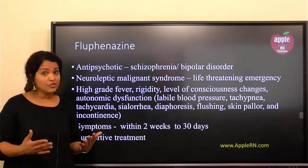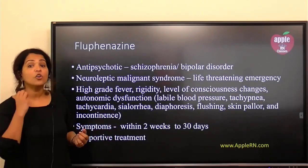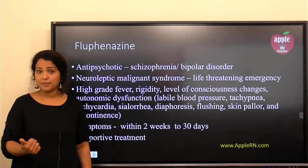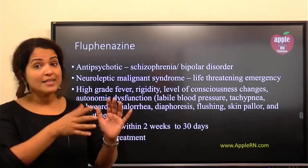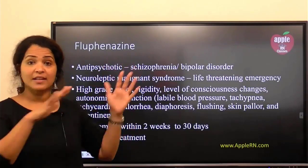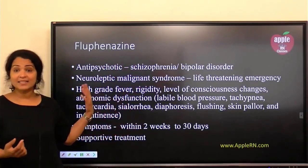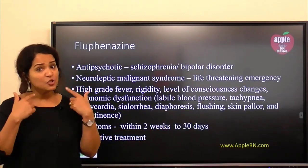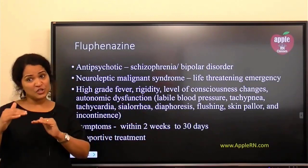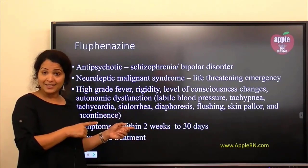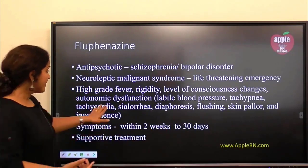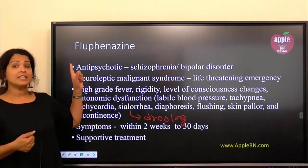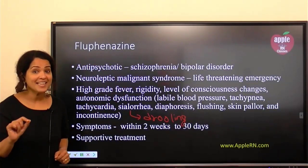Level of consciousness changes can be confusion, disorientation, restlessness, and autonomic dysfunction. Autonomic dysfunction means the heart might also be affected — people can get labile blood pressure, meaning blood pressure going up and down, which can be really bad. They can even get dysrhythmia, tachycardia, sialorrhea — which is drooling or excessive salivation — diaphoresis, which is excessive sweating, flushing, skin pallor, and incontinence. These things happen as part of neuroleptic malignant syndrome caused by the antipsychotic.